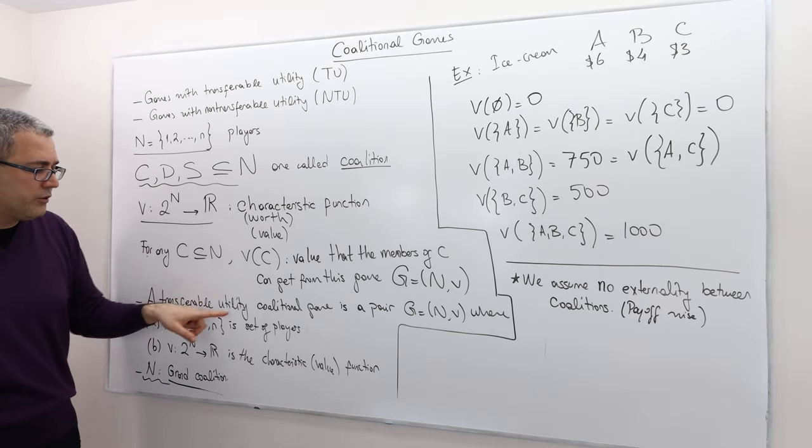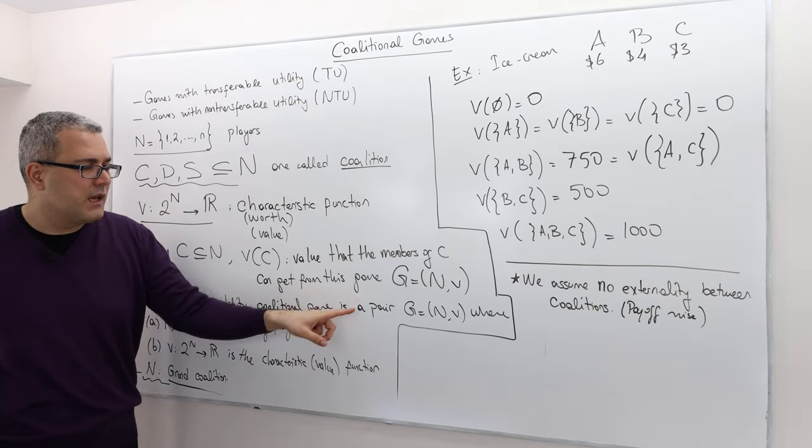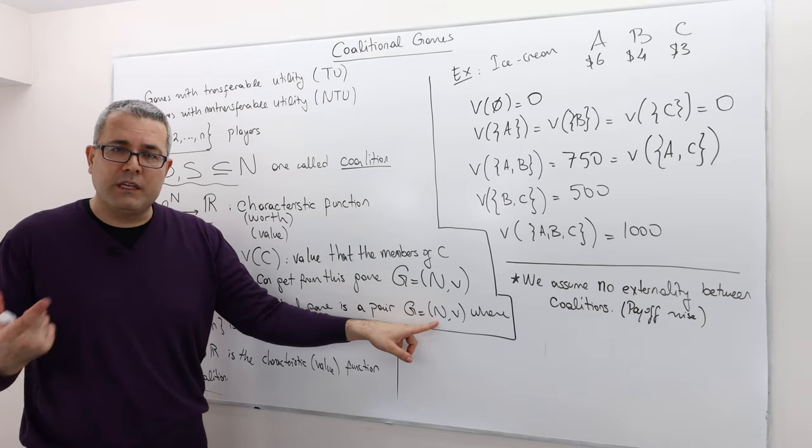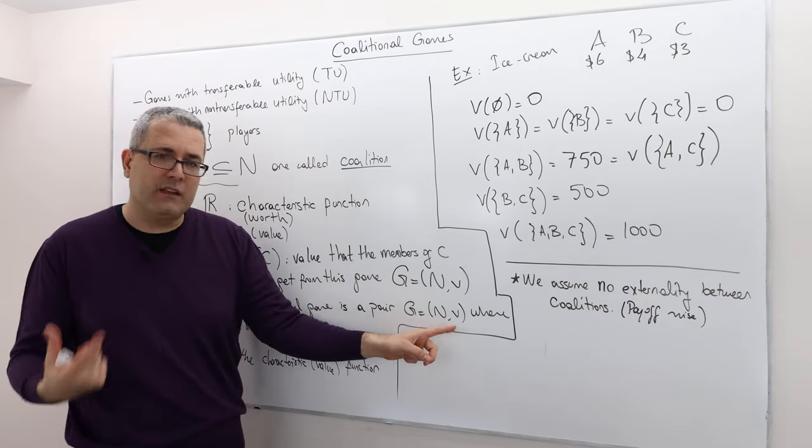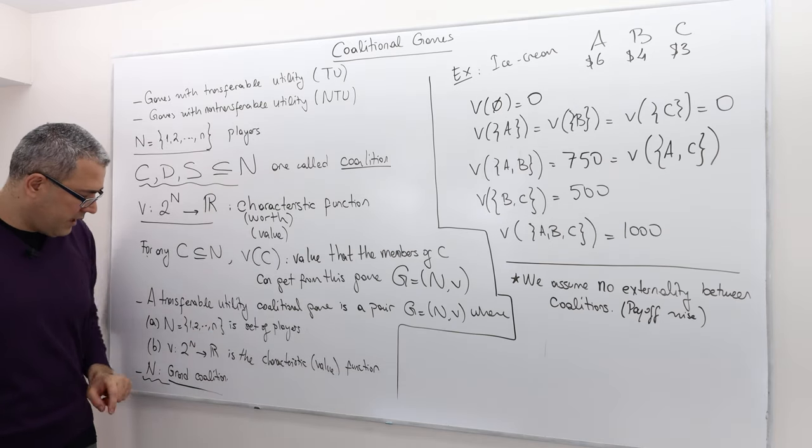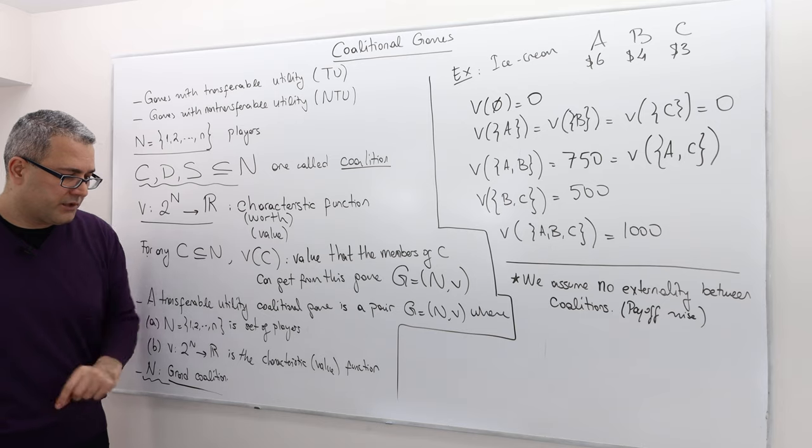So for any coalition which is a subset of set of players, v of C basically indicates the value that the members of this coalition C can get from this strategic environment, this game. We denote a game with this pair N and v. So here's the formal definition: a transferable utility coalitional game is a pair G denoted by G, so it includes the set of players and the worth function, where N is the set of players and v is the characteristic function.